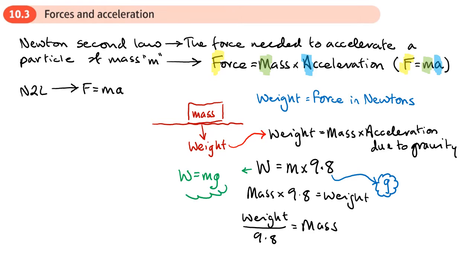You are allowed to give answers in terms of g, or replace 9.8 with g and use g in your working until you get to the end, or leave an answer with g. That way you don't need to worry about rounding to two significant figures. Where you see g, it represents the acceleration due to gravity: 9.8 meters per second squared.